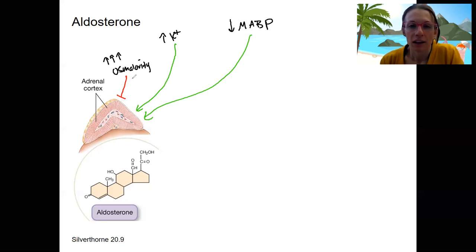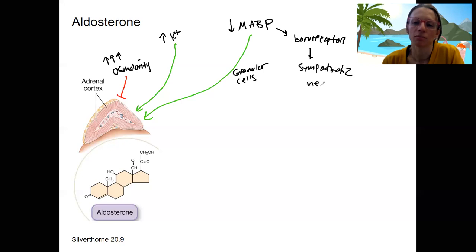The pathway along here is through granular cells. Well, it's actually more than one mechanism. It also is through baroreceptors, which trigger the sympathetic nervous system. Both of these are going to result in renin and then angiotensin production.